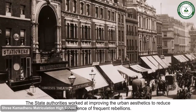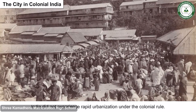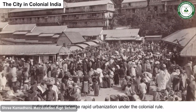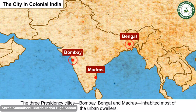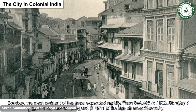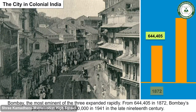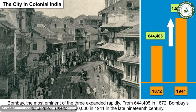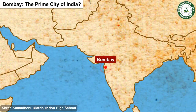The City in Colonial India: India did not experience rapid urbanisation under colonial rule. The three presidency cities — Bombay, Bengal and Madras — inhabited most of the urban dwellers. Bombay, the most eminent of the three, expanded rapidly. From 6,44,405 in 1872, Bombay's population rose to 1,500,000 in 1941. By the late 19th century, Bombay had become the prime city of India.